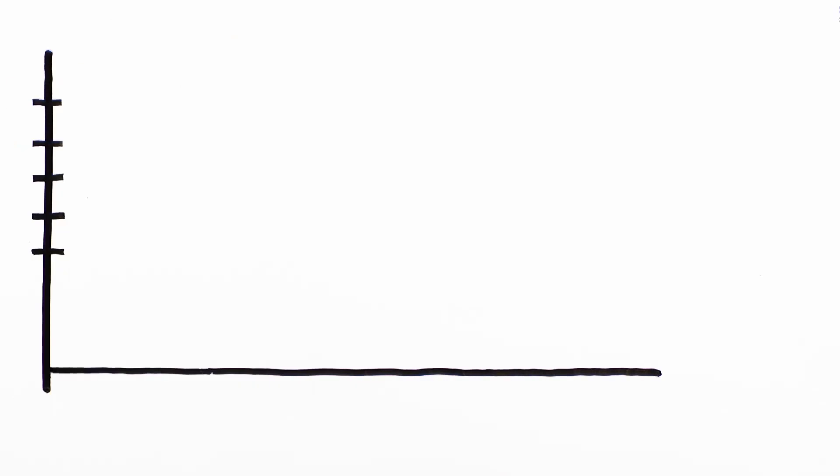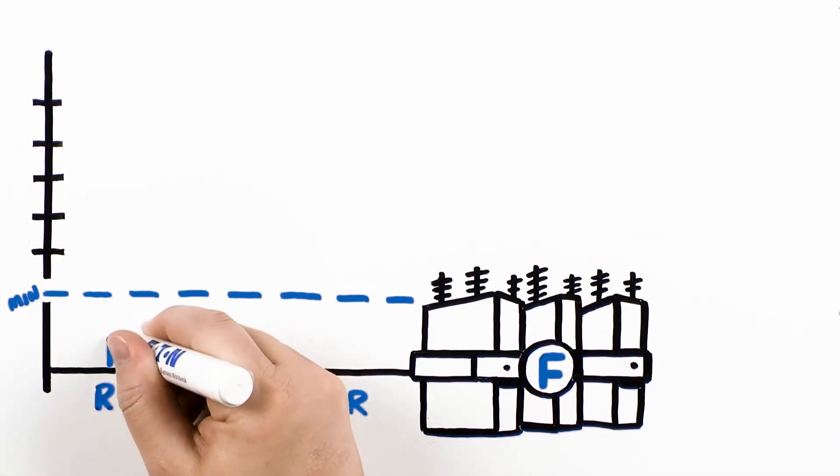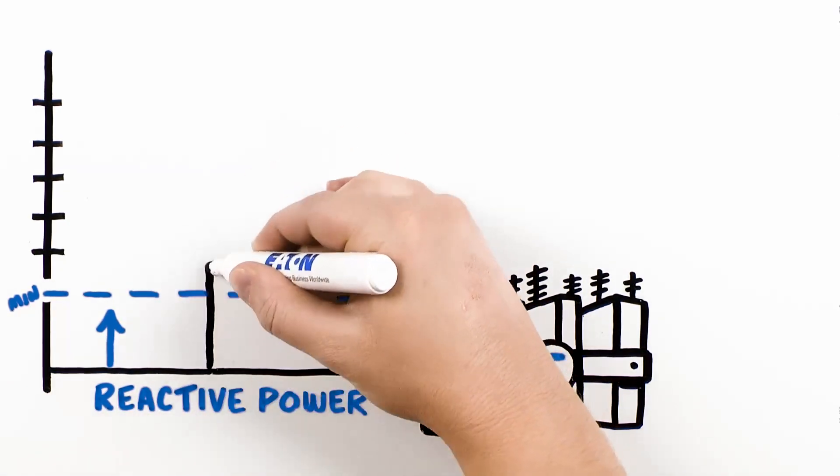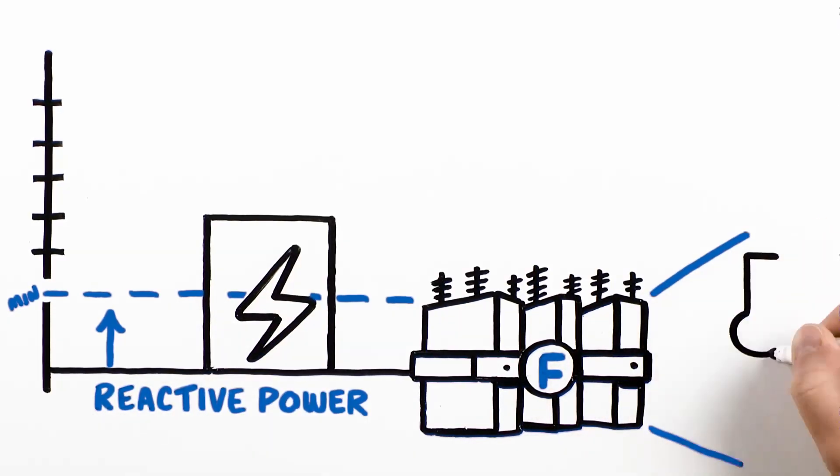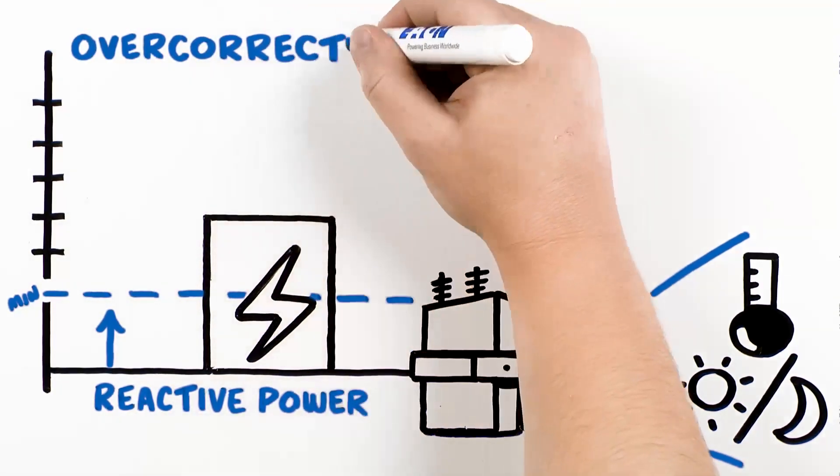Fixed banks ensure that your system consistently has the minimum amount of reactive power needed to perform at lowest load. However, as loads can vary based on the type of equipment on the system and usage, as well as factors such as temperature, time of day and season, it is vital to integrate controls that can prevent overcorrection.